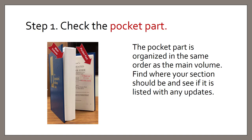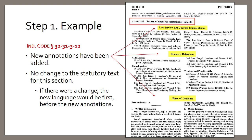To use a pocket part, locate it on the inside back cover of the volume, check the date on the front page to see how current it is, and then look for the section you're updating. If it's not included in the pocket part, no updates had been made when it was published. Here's an example from the pocket part to the Indiana Code — its format mirrors the layout of the main volume. In this example, the statute's entry contains only updates to the annotations; the statutory text has not been changed.